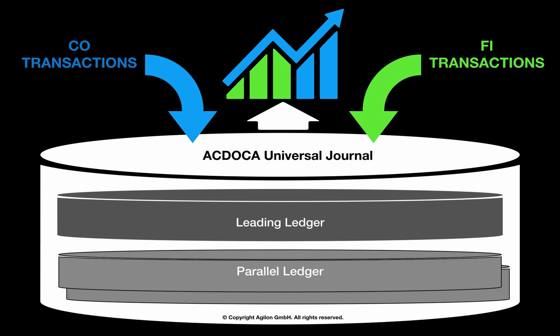In SAP S/4HANA, all cost elements — primary and secondary — are created as GL accounts. All CO transactions lead to journal entries in financial accounting and are split into debit and credit line items. The original CO document number is stored in the Universal Journal as a reference document. The origin of a CO transaction can be identified using the reference process and business transaction type stored in the Universal Journal. The journal entries in the Universal Journal contain all relevant attributes from the original CO documents, including organisational units, CO object assignments, COPA segment, and material ledger characteristics.